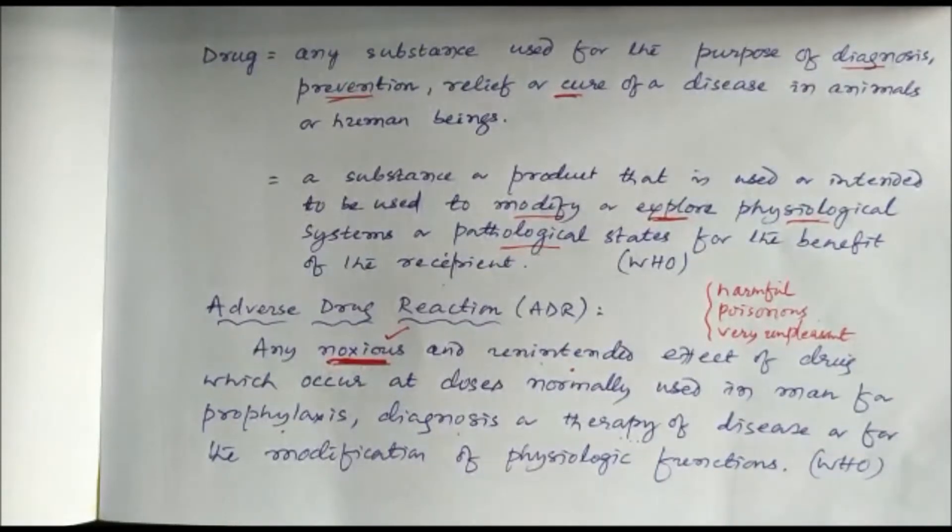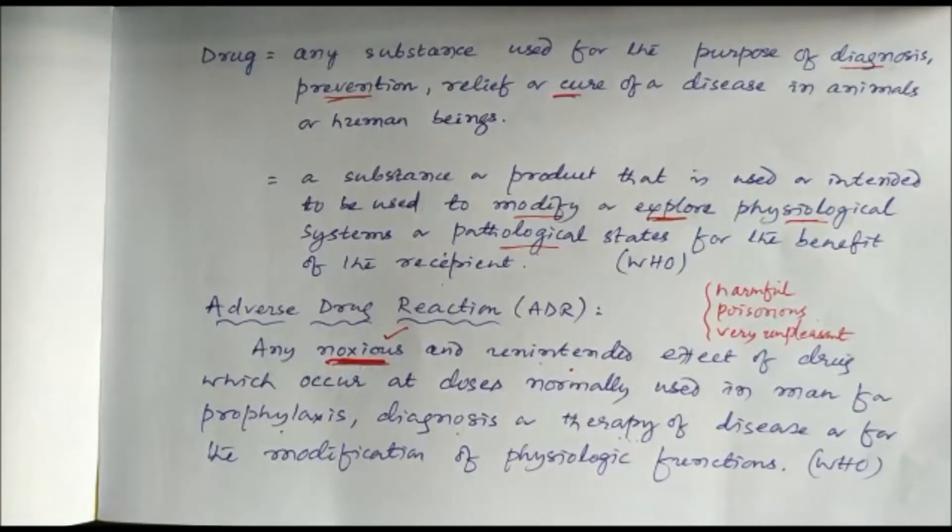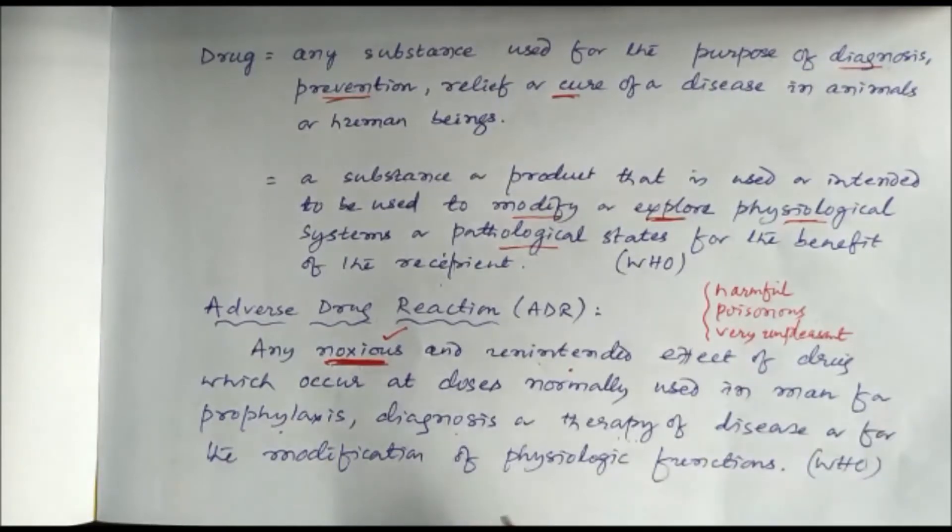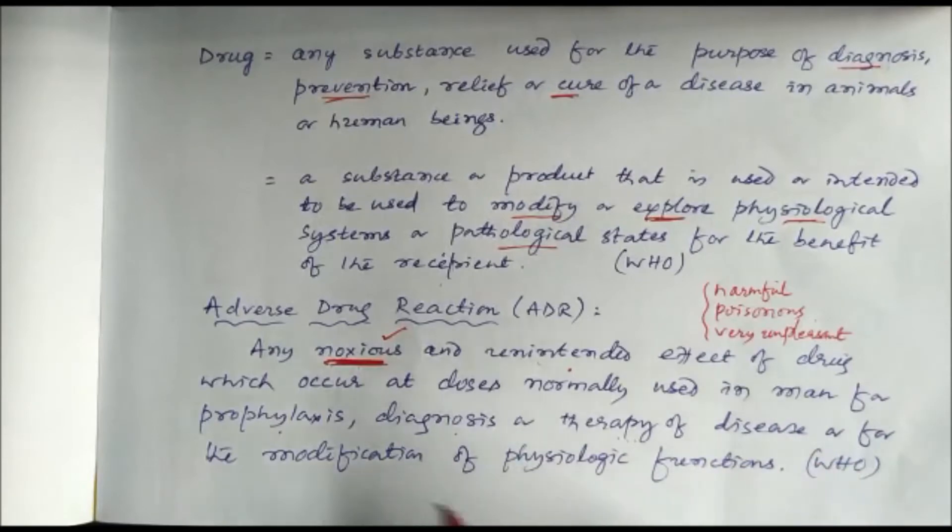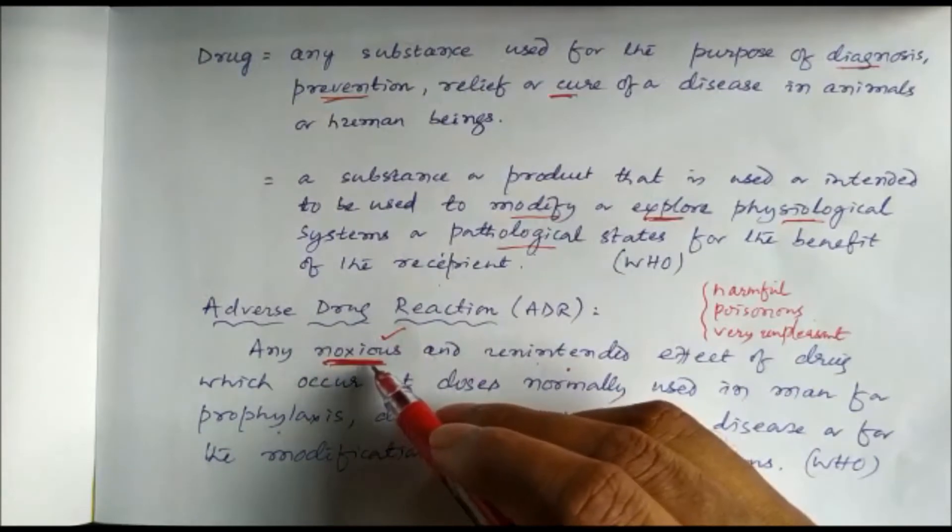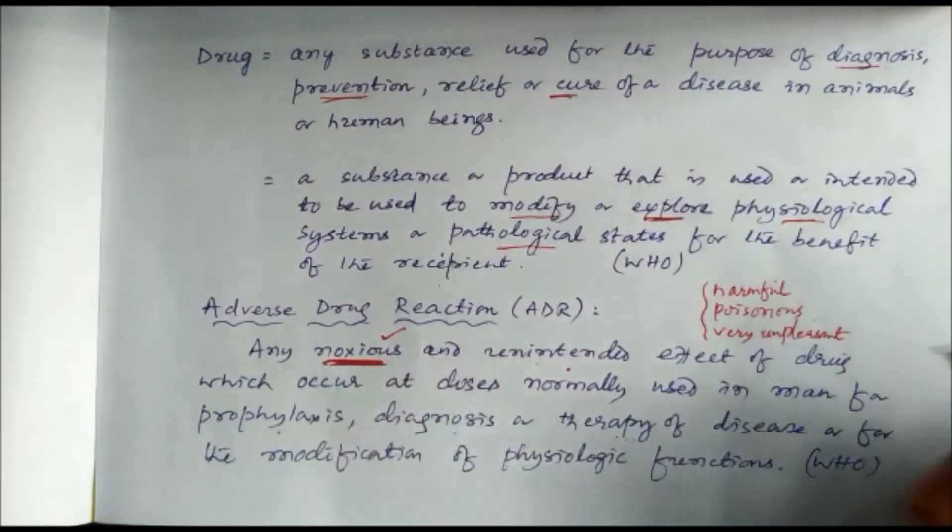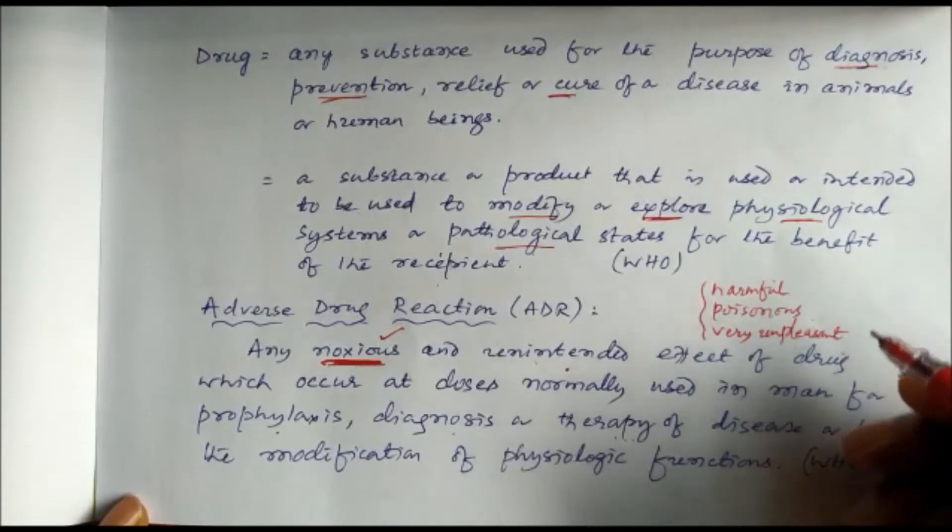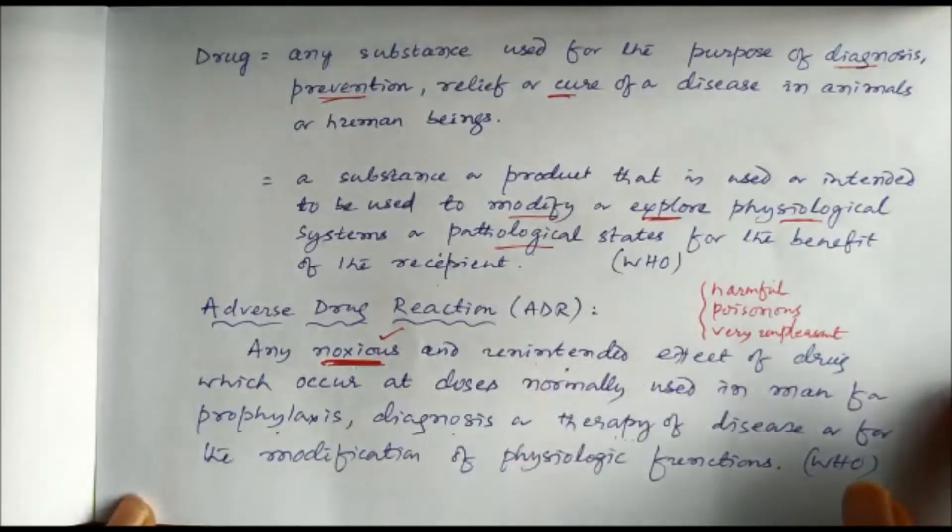Namaskar, today we will study adverse drug reaction. As we know, the definition of a drug is a substance used for either pathological states or for physiological conditions. Adverse drug reaction is any noxious and unintended effect of a drug which occurs at normal doses for prophylaxis, diagnosis and treatment of disease, or modification of physiological condition. Noxious means harmful, poisonous, or very unpleasant, so any reaction which is harmful, poisonous, or very unpleasant is called an adverse drug reaction.